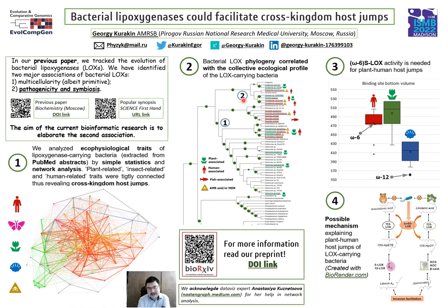You can see that our phylogenetic trees of bacterial lipoxygenases strongly correlate and correspond with this network. For your convenience, we have used the same coloring and mapping scheme. You can see that the same clusters, same intersections, and the same host range are observed here.